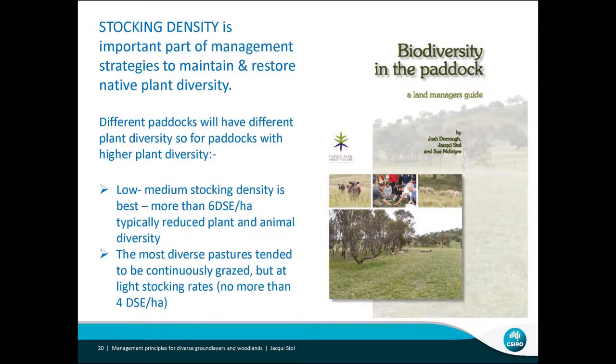Another real key lever is stocking density. A book that we wrote — Sue McIntyre, Josh Dorrough and myself — 'Biodiversity in the Paddock,' available on the Future Farms and CSIRO websites, has a lot of this information. Different paddocks will have different plant diversity. When you've got higher plant diversity, the low to medium stocking density was best. The most diverse paddocks we found were actually continuously grazed paddocks, but at low stocking densities — typically less than 4 DSE per hectare.